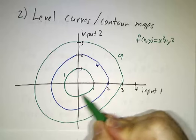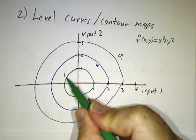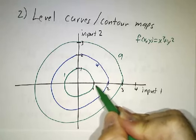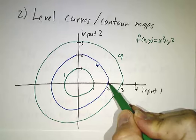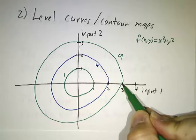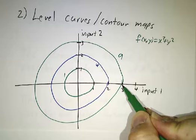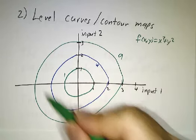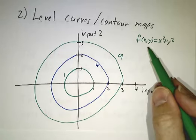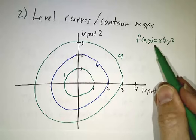the function takes on the value of one. This is the circle x squared plus y squared equals one. This is the circle x squared plus y squared equals four. This is the circle x squared plus y squared equals nine.